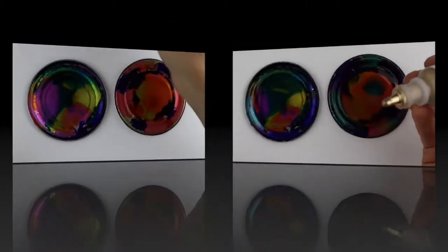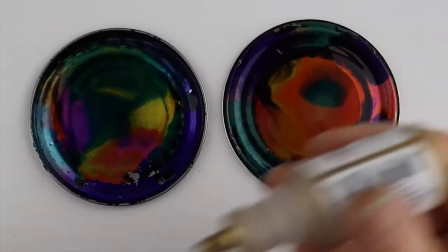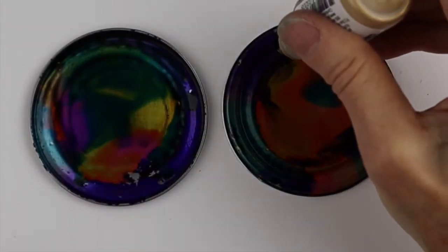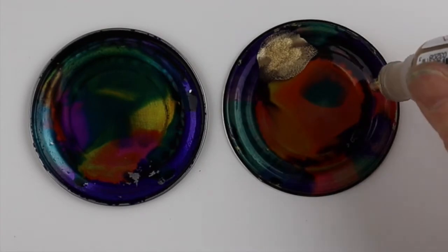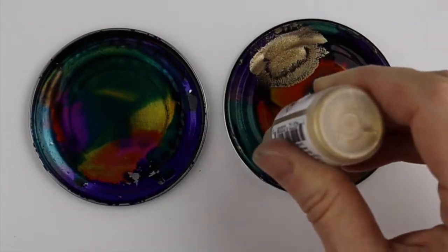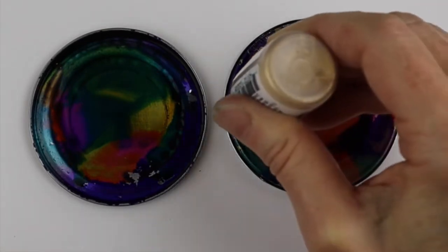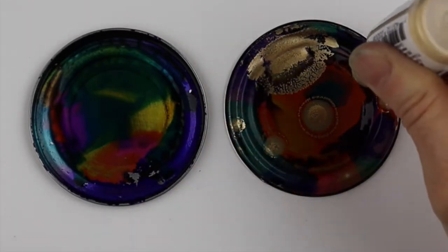Now I'm going to use some metallics. Sometimes they get a little plugged up, so just wipe the end if the hole gets plugged. We're just going to do little bits of the metallic on there too.